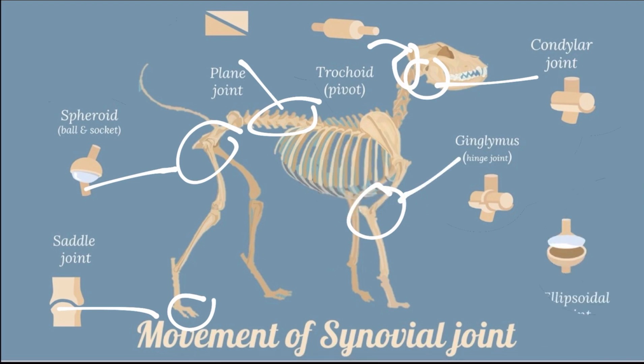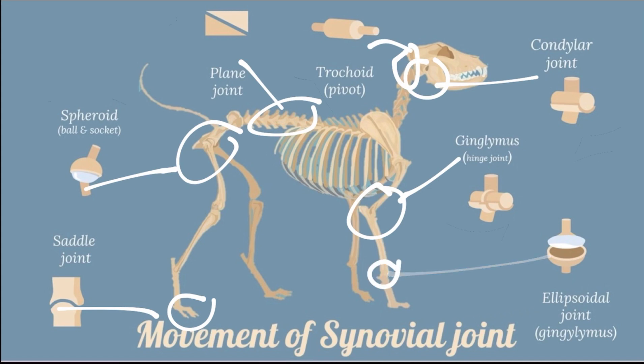Next is the ellipsoidal joint. It has an articular surface that is expanded more in one direction than the other, forming an ellipse. An example is the joint between the distal end of the radius and the proximal row of carpal bones in domestic animals.